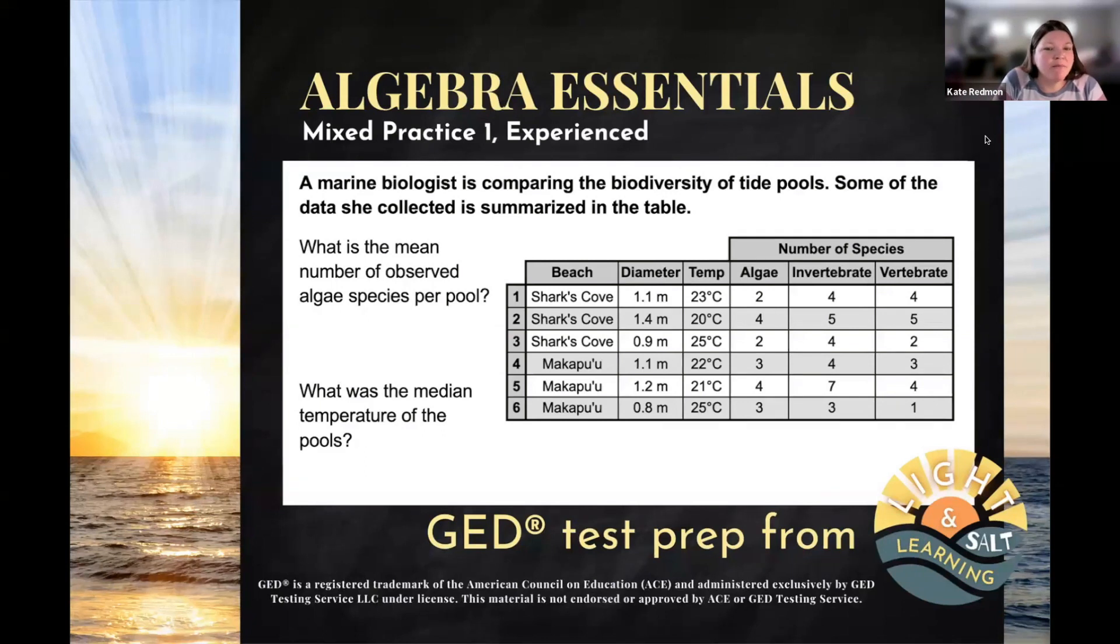So a marine biologist is comparing the biodiversity of tide pools. Some of the data she collected is summarized in the table. This is why we see this kind of a problem on all three tests, because this is data, this is information that's collected, and both sciences and social scientists collect data. And if that data is in the form of numbers, as much of this data is, then we can analyze it using math.